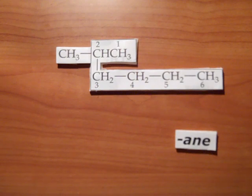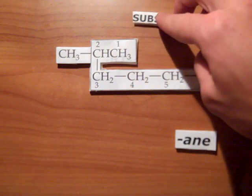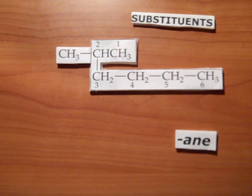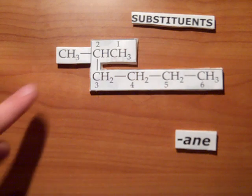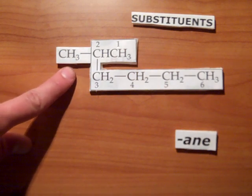Groups attached to the main chain are called substituents, because they are substituted in place of a hydrogen atom. Second, number the carbons in the main chain starting with the end closest to a substituent. In this case, this CH3 group right here.